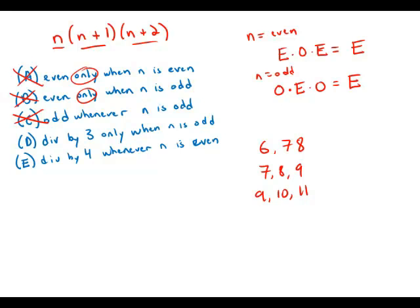It kind of makes sense because the multiples of three—every third number is a multiple of three. So if you pick three numbers in a row, one of them is going to have to be a multiple of three.